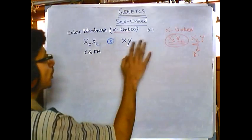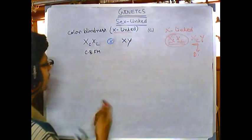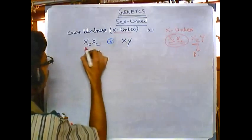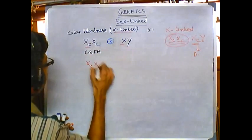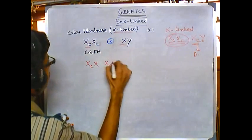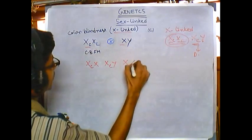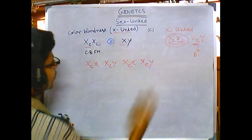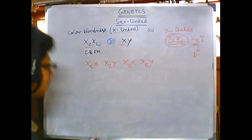After that, if you make a cross: this Xc with this X, so Xc Y; this Xc with X, Xc X; this Xc with Y, so Xc Y. This is going to be the result. And in this result, what we are going to see is that mothers, if they are carrying two C's, then only they are diseased, so none of the females are diseased because both of them are carrying only one C.